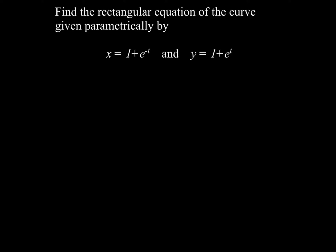So here we've got two parametric equations. We've got a curve defined by these two parametric equations. We've got x equals 1 plus e to the negative t and y equals 1 plus e to the t.